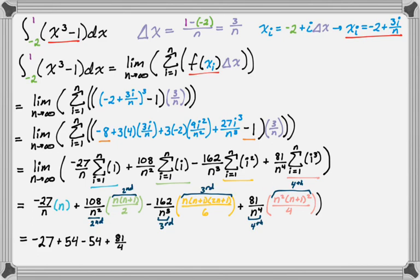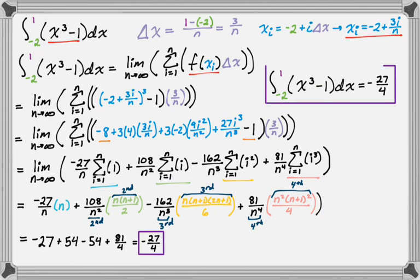And then if we clean this up, the 54s cancel. And we get negative 108 over 4 plus 81 over 4. So negative 27 over 4. So that's our answer. And what we evaluated was this. From negative 2 to 1 of x³ - 1 dx is negative 27 over 4. So it's a pretty good example with a cubic. I hope you found this helpful. And good luck. Thank you.